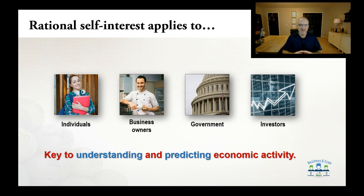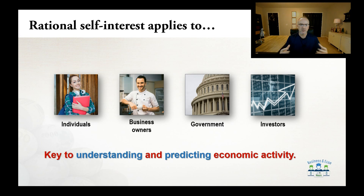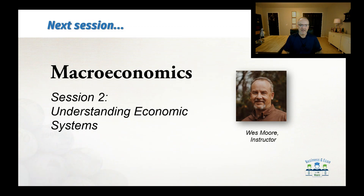This is going to be key to understanding and predicting economic activity. When we start talking about what happens if the price rises or falls, if interest rates go up, or if the government spends money — all of those things are best understood when we apply the rational self-interest principle. This is the end of session one. In session two we'll go further and talk about economic systems, socialism, capitalism, and other key concepts. I hope you'll join us — thank you very much.